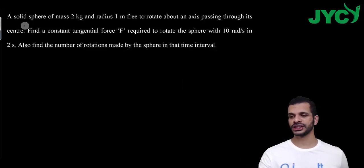So what is given in the question? There is a solid sphere of mass 1 kg and radius 1 meter, and it is free to rotate about an axis passing through its center. Find the constant tangential force F required to rotate the sphere with 10 radian per second in 2 seconds.